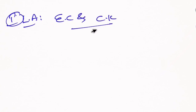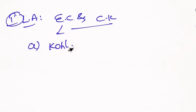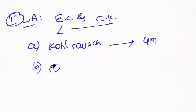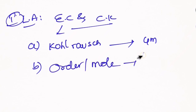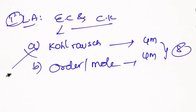The next long answer is from electrochemistry and chemical kinetics - that is the third chapter of second year. In electrochemistry, Kohlrausch's law is very important. Kohlrausch's law application is 4 marks. The other combination covering order, molecularity, and their difference is another 4 marks, making 8 marks total.